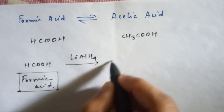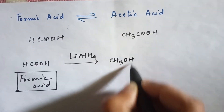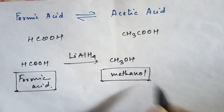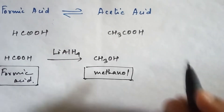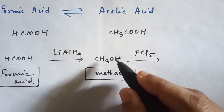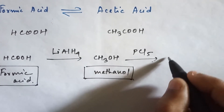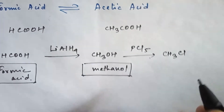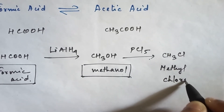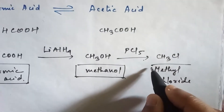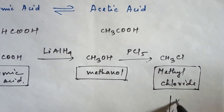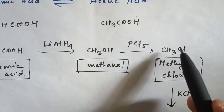If you do reduction of formic acid, it converts into alcohol — here the alcohol is methanol. Then in methanol, if you add PCl5, that is phosphorus pentachloride, the OH group will be replaced by chlorine and you will get the product CH3Cl, that is methyl chloride.